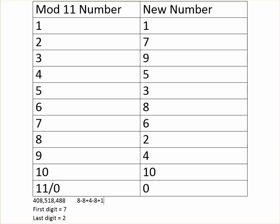Let's see what that looks like. Starting from the right: 8 − 8 − 8 + 4 − 8 + 1 − 5 + 8 − 0 + 4. Working through it: 8 − 8 = 0, + 4 = 4, − 8 = −4, + 1 = −3, − 5 = −8, + 8 = 0, − 0 = 0, + 4 = 4. Now, importantly — if your result is less than zero, just add 11; if it's greater than 11, subtract 11, so the number stays between 0 and 11 inclusive. In this case we don't need to do that because our result is 4.